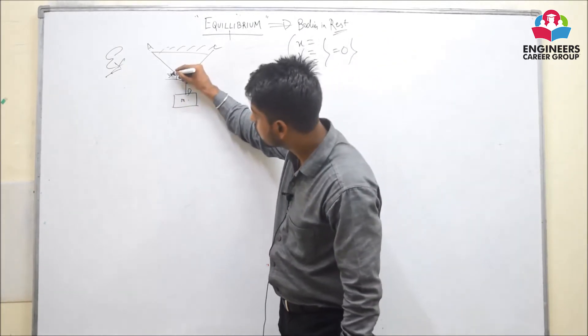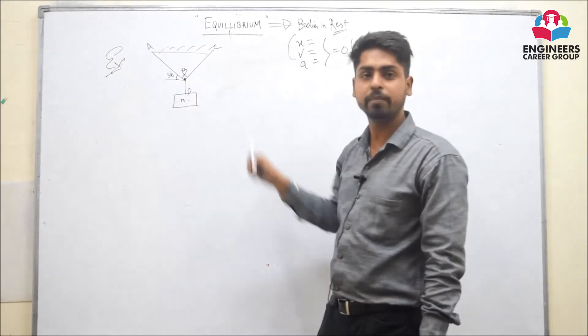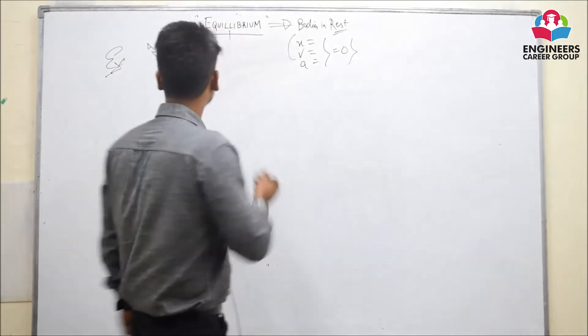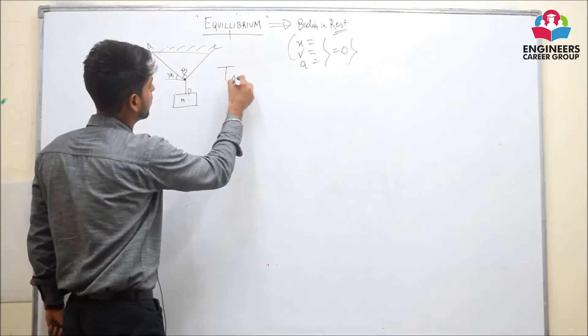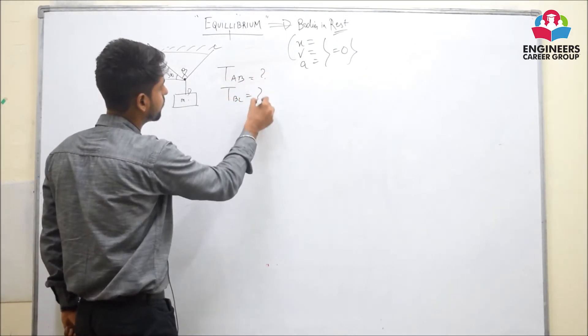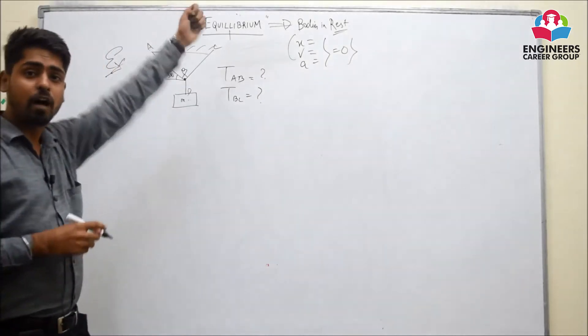We want to calculate the tension in strings AB and BC given the configuration is this angle is 30 degrees and this angle in between is 90 degrees. Now, what we have to calculate here is tension in string AB and tension in string BC. Now, the question arises how to calculate this?